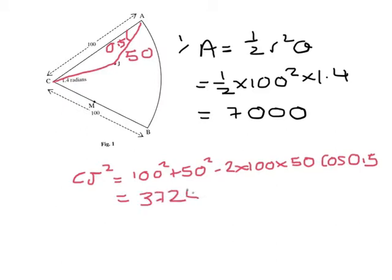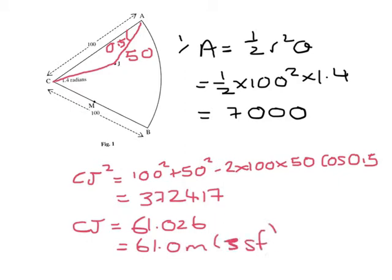3,724.17, and taking the square root of that, I get an answer of 61.026. So that's 61.0 m to 3 significant figures.